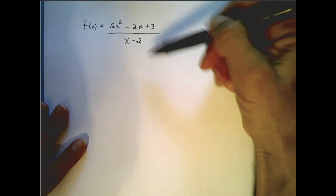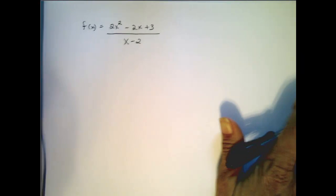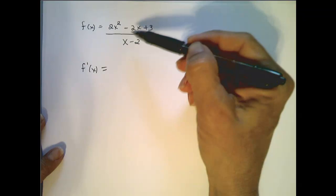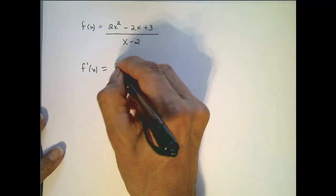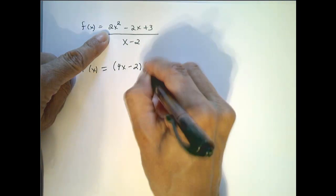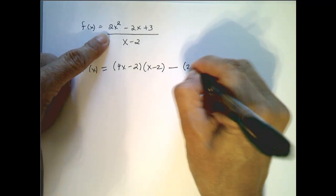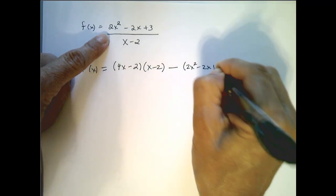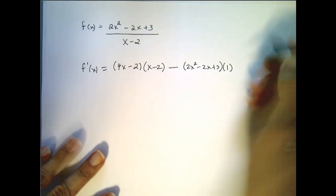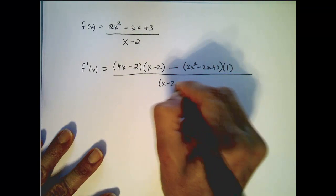In this case, we can't simplify this like we did in the original problem, so we're going to need to do the quotient rule. It's going to be the derivative of the top function, which is 4x minus 2, times the bottom function, x minus 2, minus the top function, 2x² minus 2x plus 3, times the derivative of the bottom function, which is just 1. All of that is over the bottom function squared.